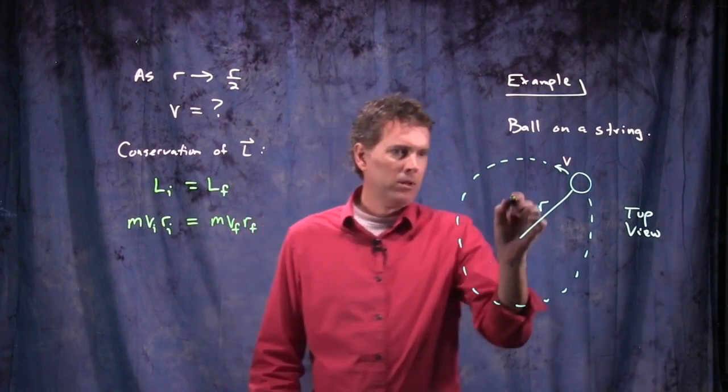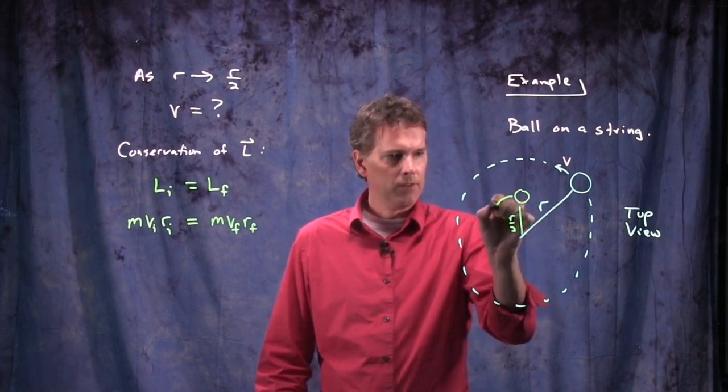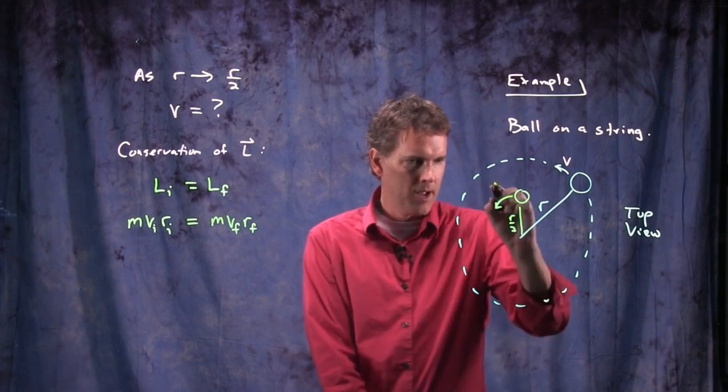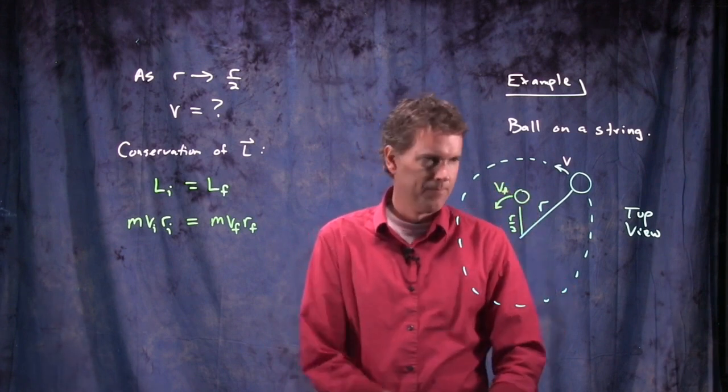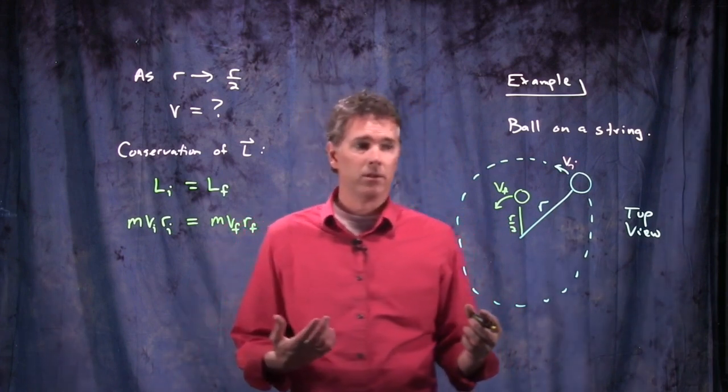So when the ball gets to half its original length and it's going around, we had V initial before, now we have some V final. And let's see if that's bigger or smaller.